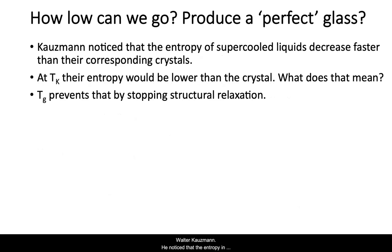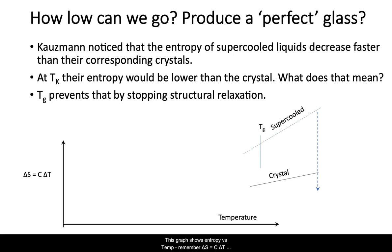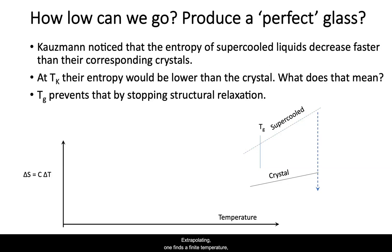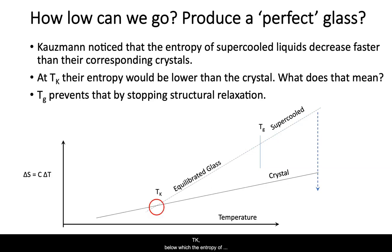I ask that because of a puzzle proposed 80 years ago by Walter Kauzmann. He noted that the entropy in glasses decreases faster than in crystals. This graph shows entropy versus temperature. A change in entropy is heat capacity times the change in temperature, and the specific heat of a glass is higher than that of a crystal because of its restructuring. In extrapolating this data, one finds a temperature now called the Kauzmann temperature, Tk, below which the entropy of the glass would be less than that of its crystal form. We don't know what that means — it's been referred to as a Kauzmann catastrophe.